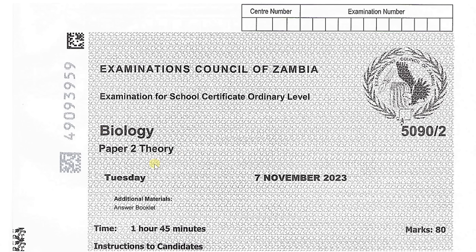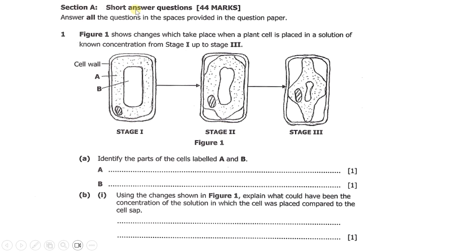Without further ado, let's go straight into the revision. This is Section A, short answer questions. For the format, answer all the questions in the spaces provided in the question paper. Question one says: Figure one shows changes which take place when a plant cell is placed in a solution of known concentration from stage one up to stage three. In this figure we have a plant cell that has been placed in the solution and we see the changes from stage one, stage two to stage three.